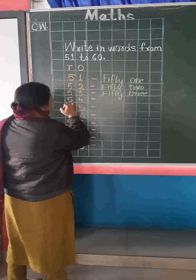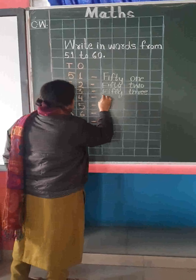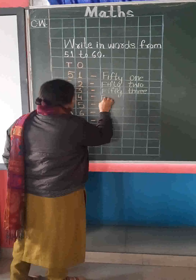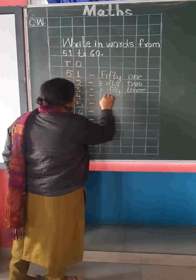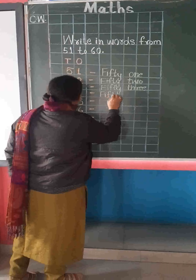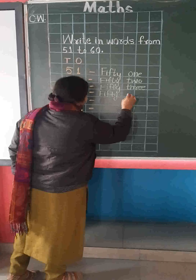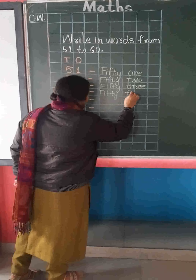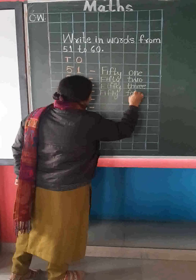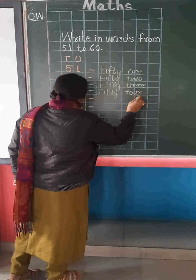Now this number is 54. So we will write here 50 and here we will write 4: F, O, U, R. 54.